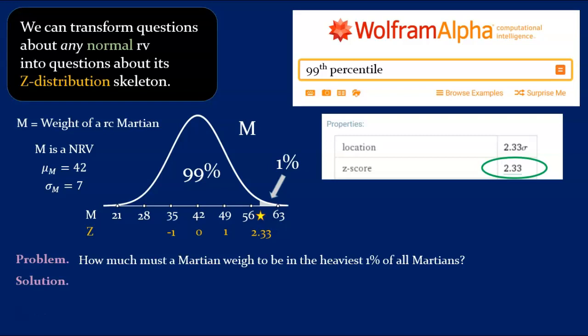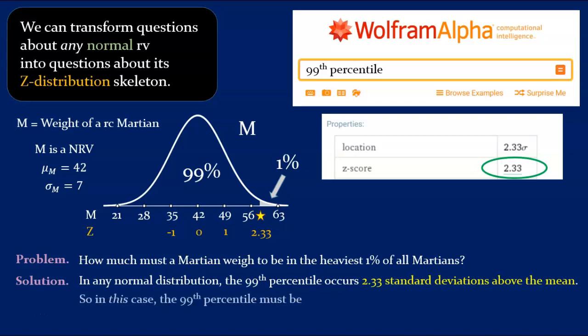Pressing enter, and perhaps scrolling down a bit, it gives the result we need. The 99th percentile has a z-score of 2.33. What this tells us is that in any normal distribution, the 99th percentile occurs 2.33 standard deviations above the mean. So, in this case, the 99th percentile must be 42, which is the mean, plus 2.33 standard deviations. That is, 2.33 sevenths. Add that up, and you get 58.31 Martian pounds. A Martian who weighs at least that much is in the top 1%.